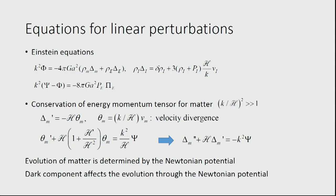Regarding scalar-vector-tensor decomposition: a theorem in cosmological perturbation theory states that scalar, vector, and tensor perturbations do not mix at linear order. They mix only at nonlinear order. This means the evolution of dark matter density is simple — you just need to know the Newtonian potential. No gravitational theory has been used yet; the only assumptions are conservation of the energy-momentum tensor and small scales.